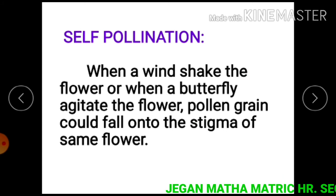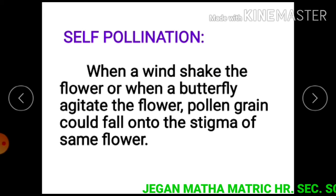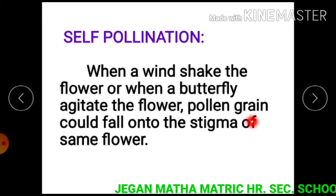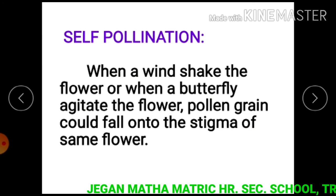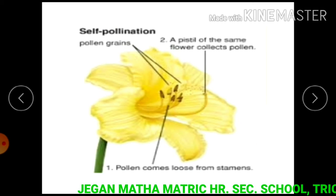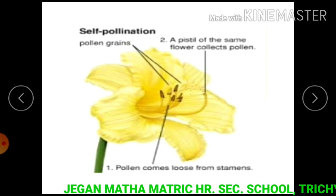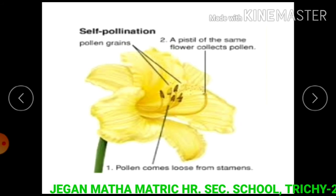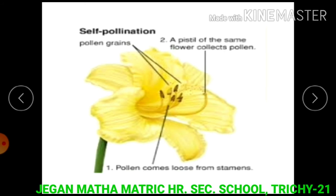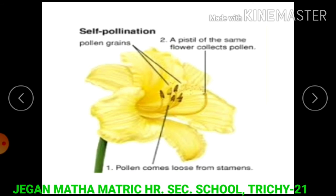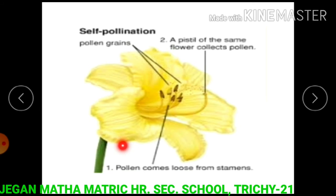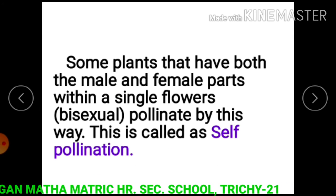Next, self pollination. When wind shakes the flower or when a butterfly agitates the flower, pollen grains can fall onto the stigma of the same flower. This figure shows self pollination — pollen grains of a flower reach the stigma of the same flower. This is called self pollination.